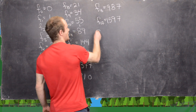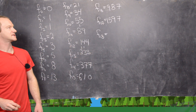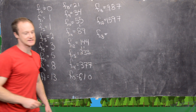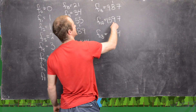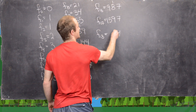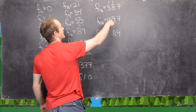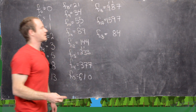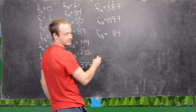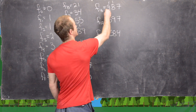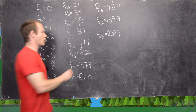And now the 18th Fibonacci number will be 1,597 plus 987. So here we're going to have 14, and then 9 plus 1 is 10, plus 8 is 18. And then we have 5 plus 1 is 6, plus 9 is 15. And we carry the 1, and then we have 2. So 2,584.